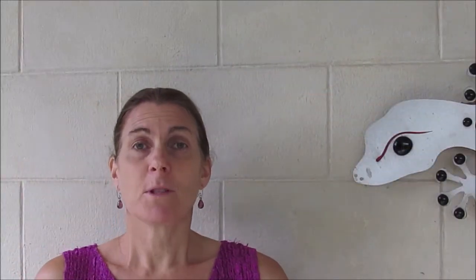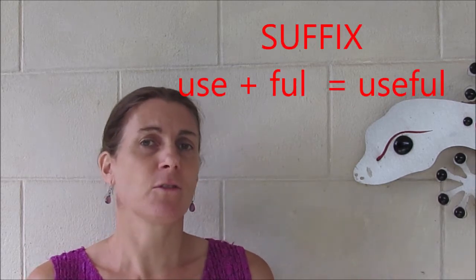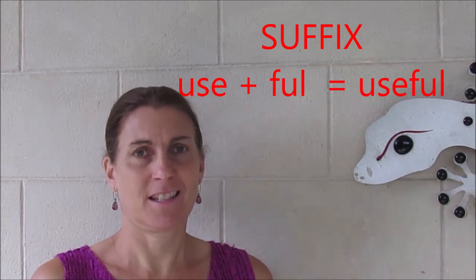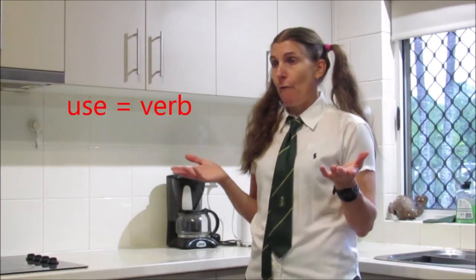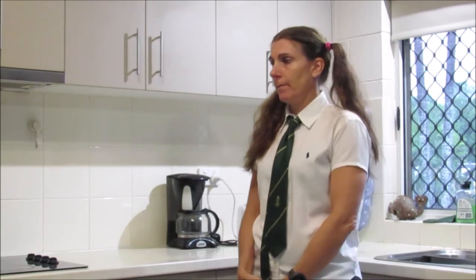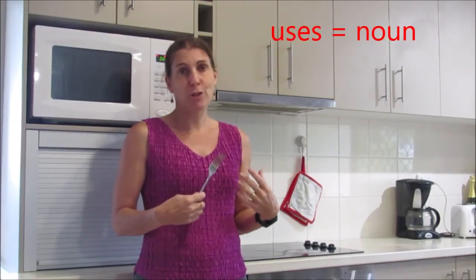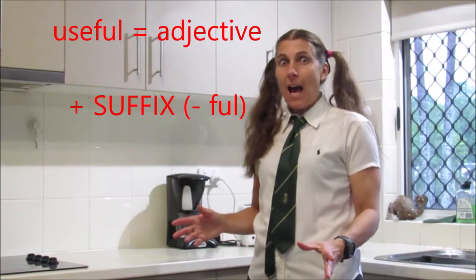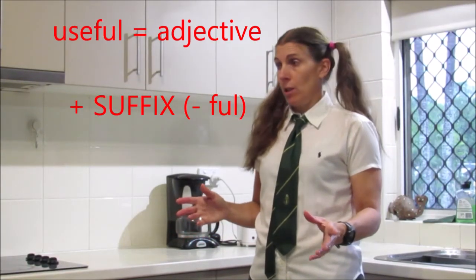Sometimes when we change how we use a word in English, we add some letters at the end of the word. This is called a suffix. For example: 'And how do you use your fork?' — 'This fork has many different uses.' — 'That fork is really useful!'